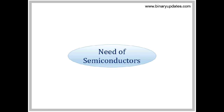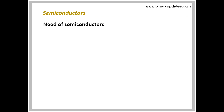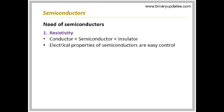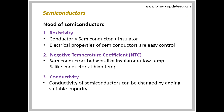Need of semiconductors. The question arises: why are semiconductors used instead of conductors? This question can be answered with three properties. Resistivity of semiconductors is higher than conductors. The semiconductors are preferred because their electrical properties can be easily controlled compared to conductors. Semiconductors have a negative temperature coefficient, and their conductivity can be changed by adding a suitable impurity. This property will be explained in detail later.